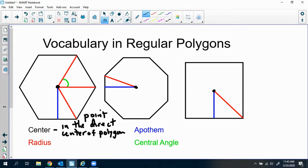The radius is a segment from the center to a vertex.